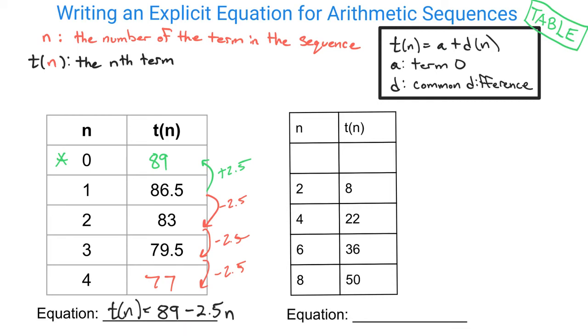In our second example, it's slightly different because we don't have the 0 listed here. But as we look at our pattern, our n's are changing by more than just 1. They're changing by 2, which we can handle with our arithmetic sequences.